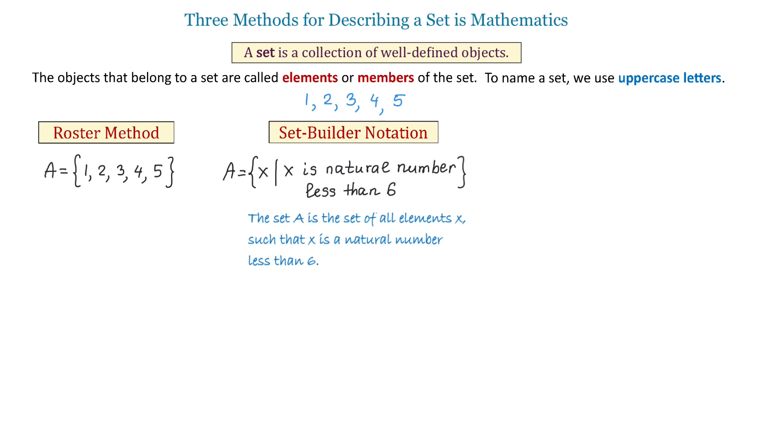Now, with the set-builder notation, if we want to use more math symbols instead of words, then we can write the following. Set A is the set of all elements X, such that X is an element of the natural numbers and X is less than 6.